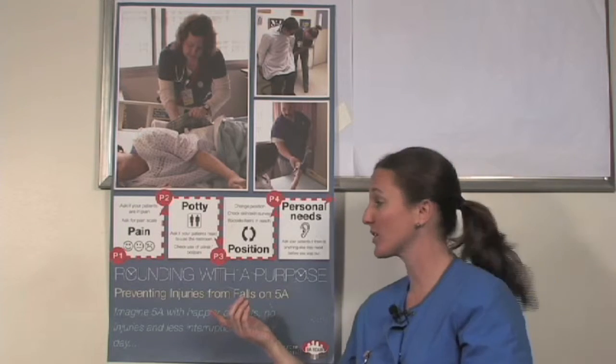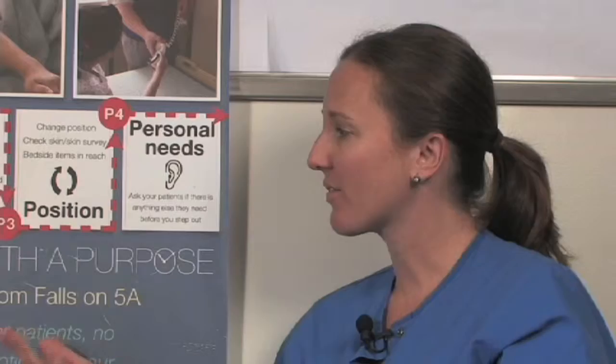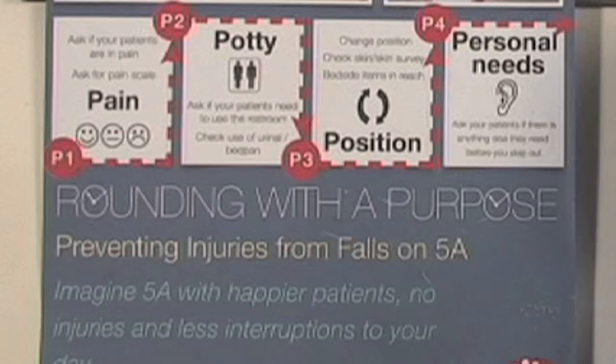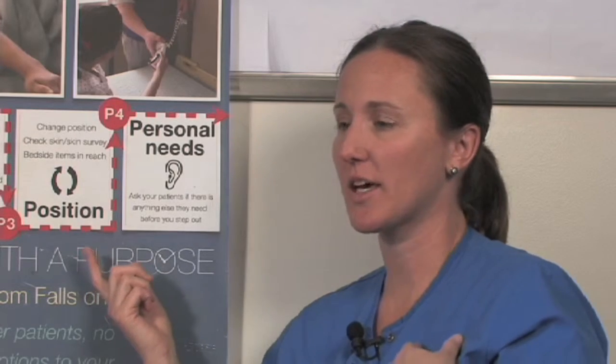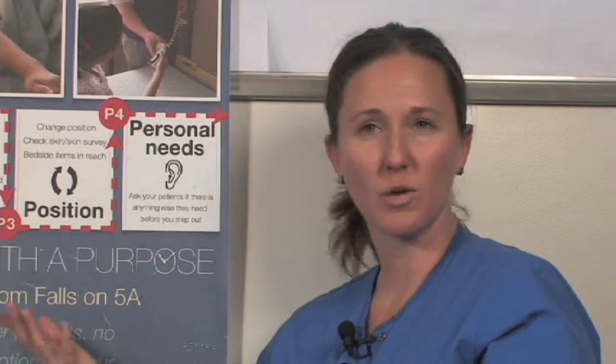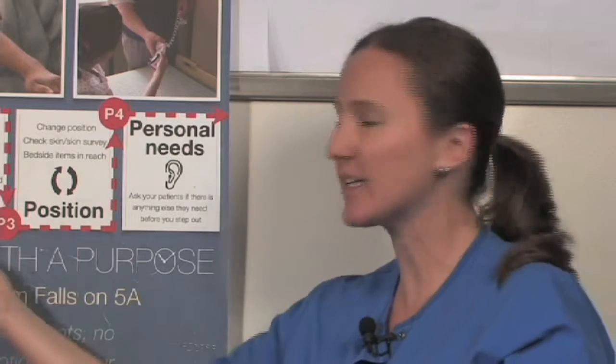I was at a conference and we were learning about decreasing falls and hourly rounding, but we decided to make it a little more meaningful. What we decided to use is the term 'rounding with a purpose' — that's what we call it here at San Francisco General. We started with the three P's: pain, potty, and position, and we did some testing with that. I was one of the nurses that tested it and I had five patients that I was doing my rounding on.